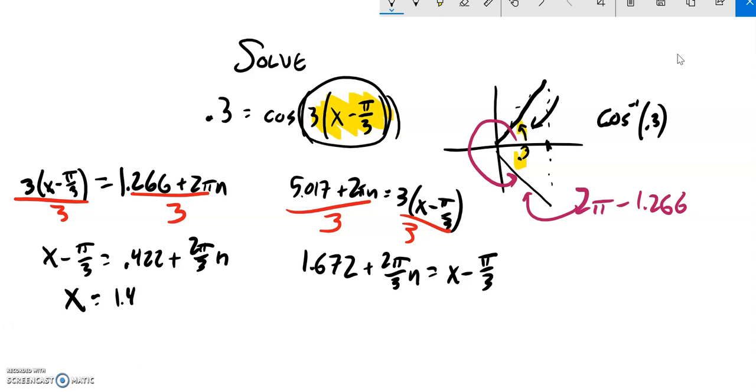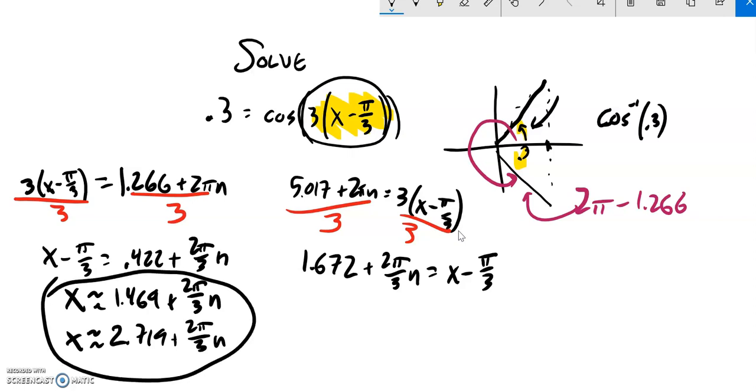I'm saying equals, I should say about. And over here if I add π/3 to that, I'll just do that on my calculator. Plus π/3 gives 2.719. And there they are, those are my values.